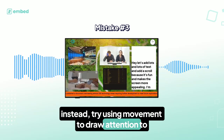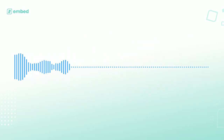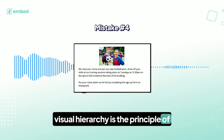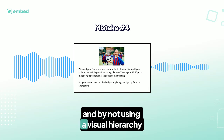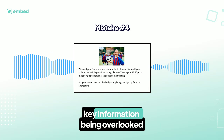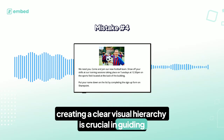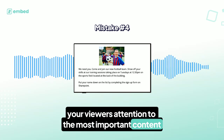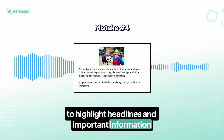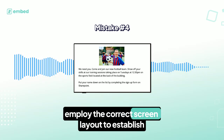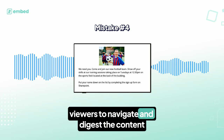Instead, try using movement to draw attention to a specific message at a specific time. Visual hierarchy is the principle of arranging elements to show their order of importance, and by not using a visual hierarchy, you will end up with key information being overlooked. Creating a clear visual hierarchy is crucial in guiding your viewers' attention to the most important content. Use larger fonts or bold text to highlight headlines and important information, and employ the correct screen layout to establish a visual hierarchy, making it easier for viewers to navigate and digest the content.